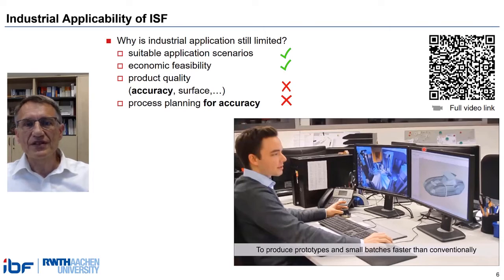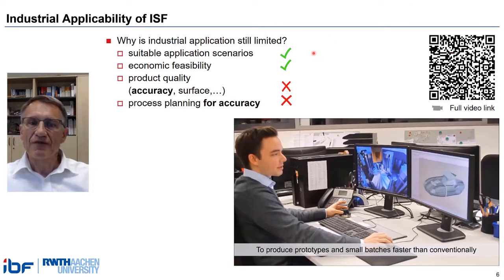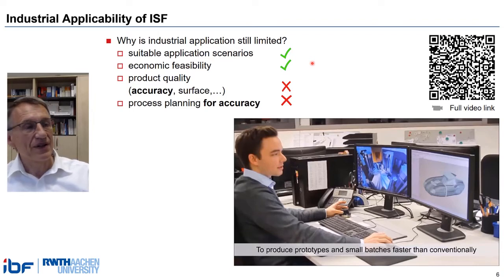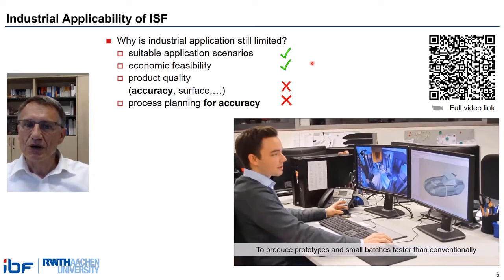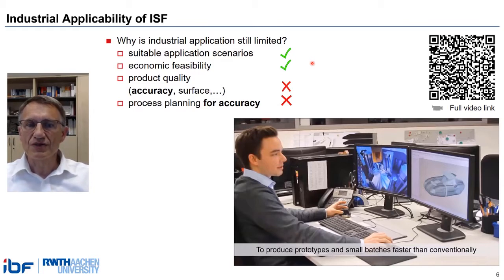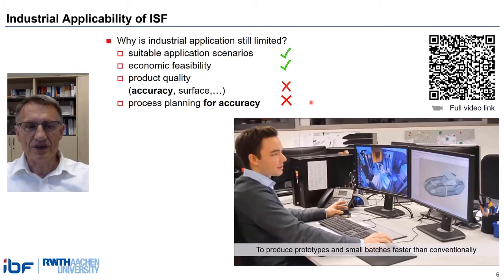We have obviously seen suitable application scenarios, and we can calculate economic feasibility. So we must ask ourselves, what are the reasons that the industrial application is still limited? To our opinion, the main reasons are a lack of product accuracy and a lack of process planning tools for accuracy, which exist for other processes.